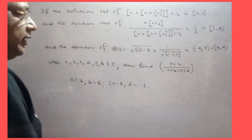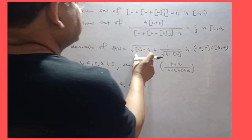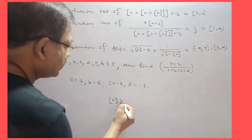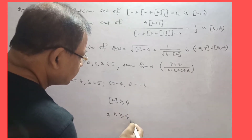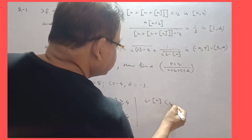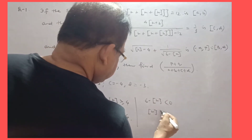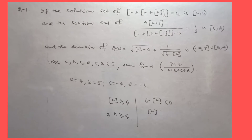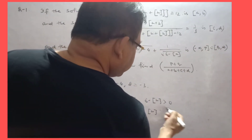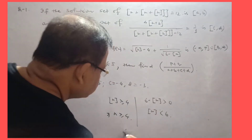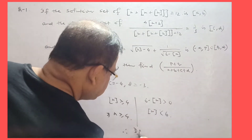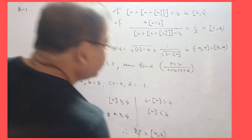Now we need to find the domain. The intersection of two conditions: the square root function requires X ≥ 4, and 6 minus X > 0 means X < 6. So the domain of this function is [4, 6).